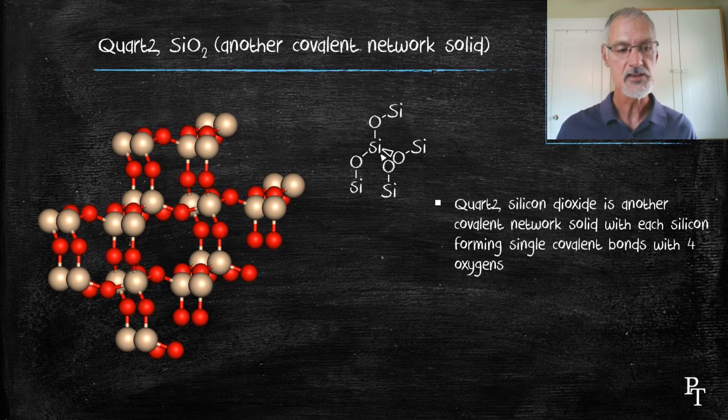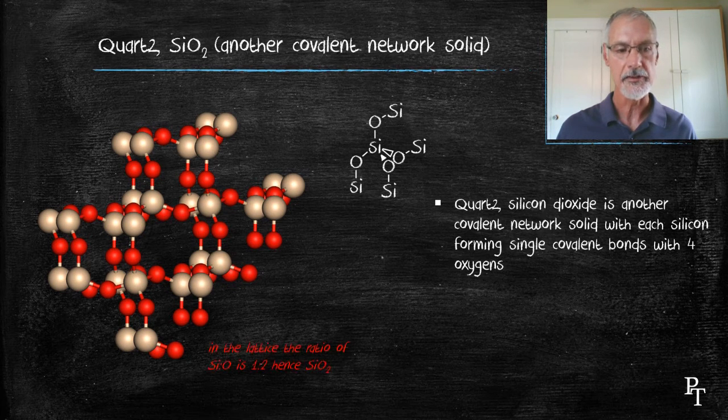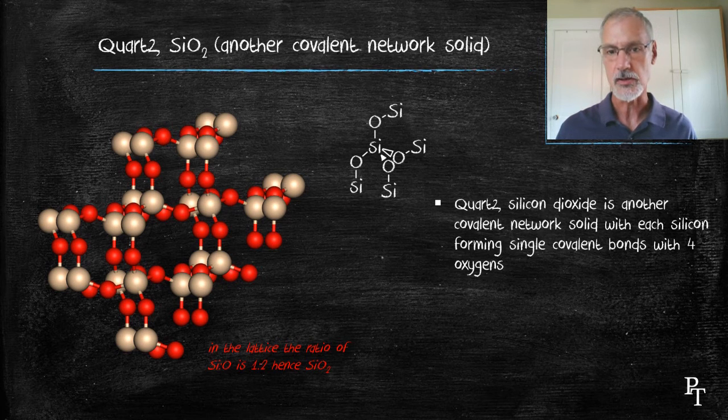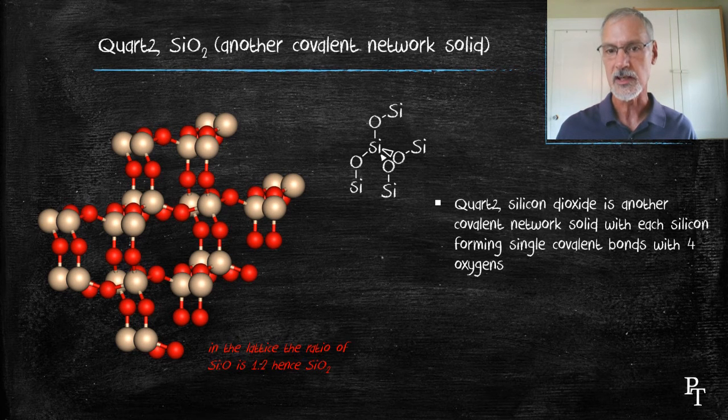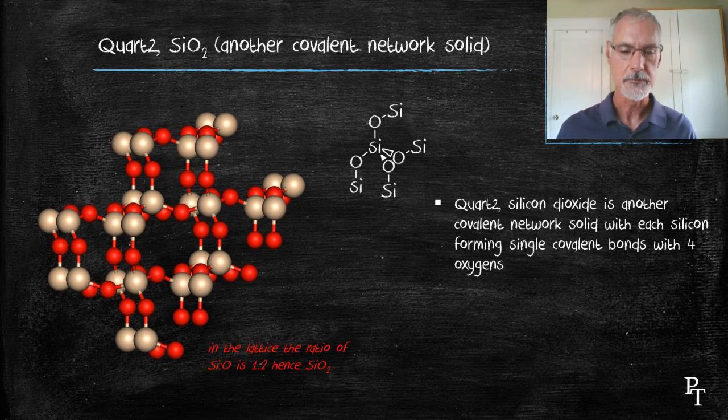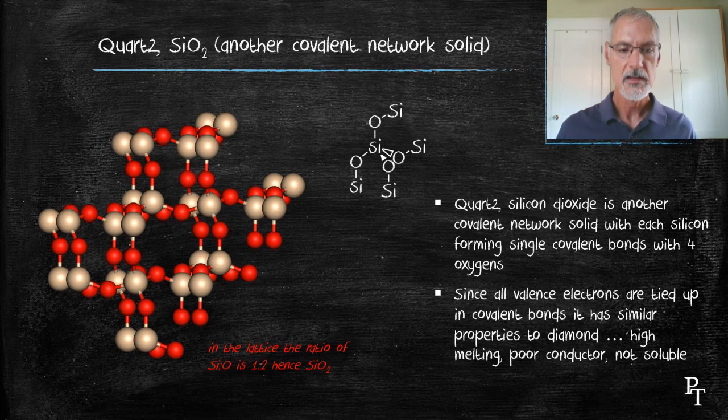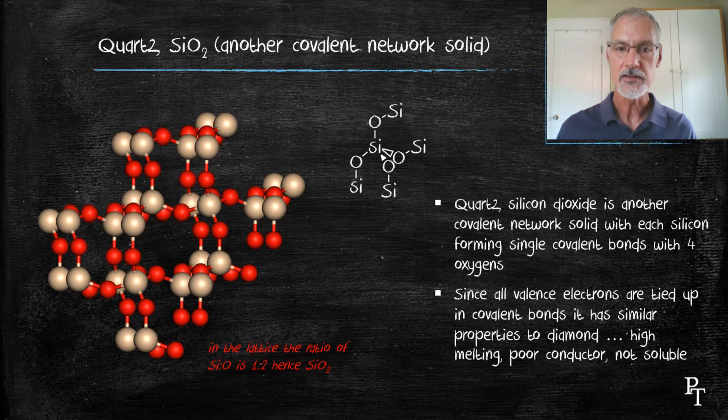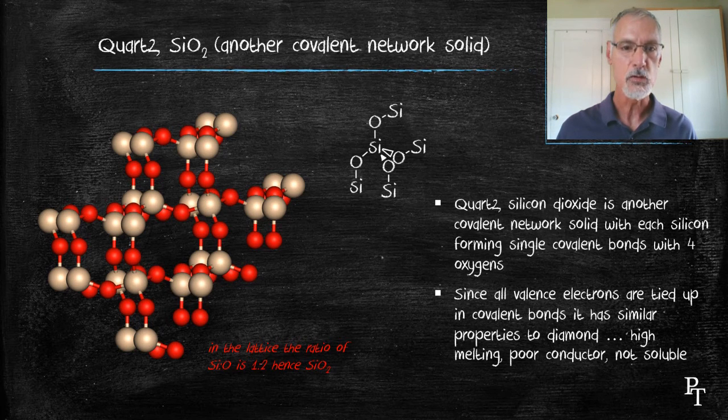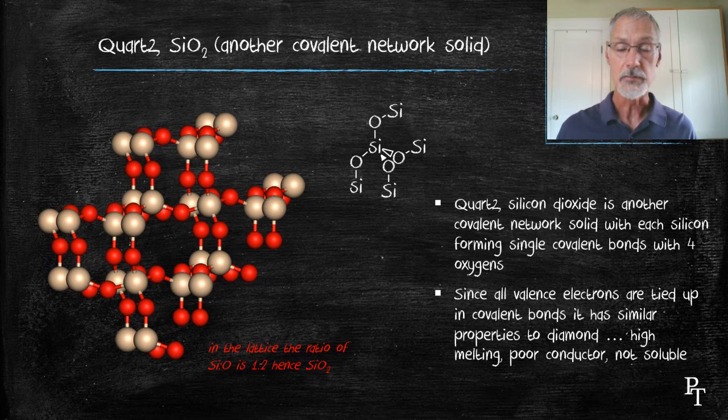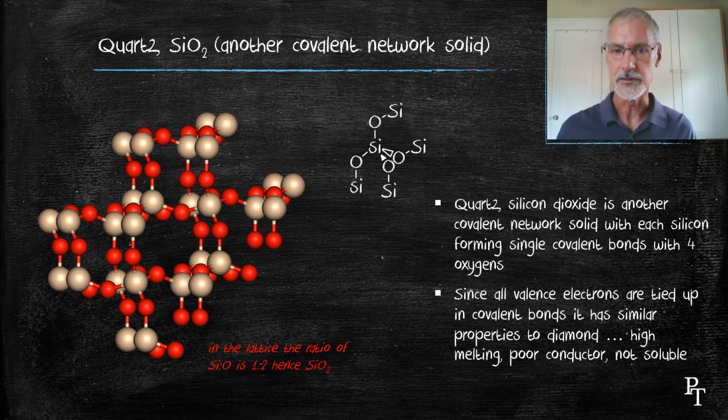If you look inside the structure and count the number of silicons and the number of oxygens, there exists a 1 to 2 ratio, and that's why we give it the formula SiO2. Again, much like diamond, since all of the electrons are tied up in those covalent bonds and not free to move, silicon dioxide is a very poor conductor of electricity. Because the bonds are all covalent, it's very high melting and also not very soluble.